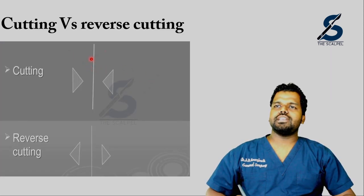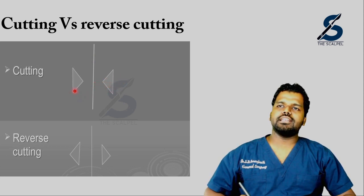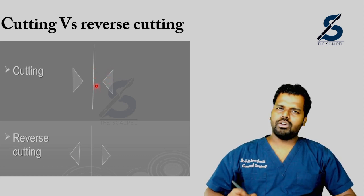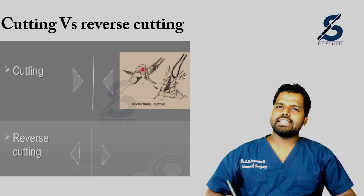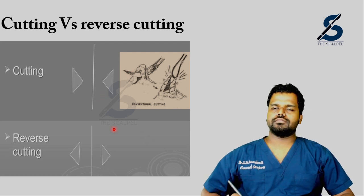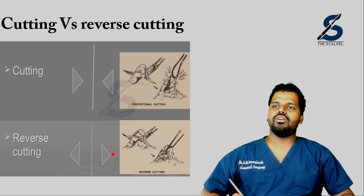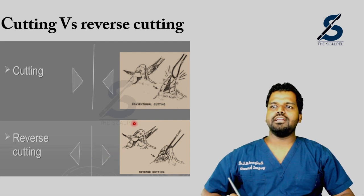Coming to the difference between cutting and reverse cutting suture needles: the bite mark of a cutting needle has the apex pointing towards the wound edge. The problem with this is that whenever you take a thin bite, there is a chance the suture material can cut through the tissue because the cutting edge is towards the wound edge. Whereas in a reverse cutting needle, this does not occur because the sharp edge is away from the wound edge, making it much less likely to cut through tissue.